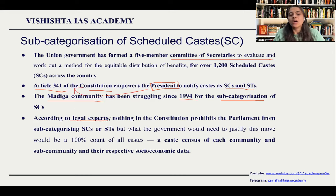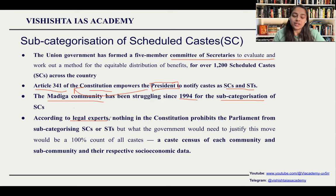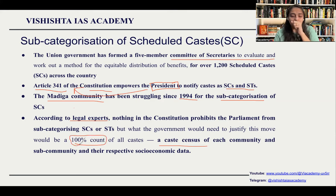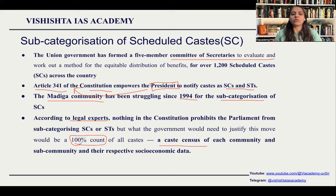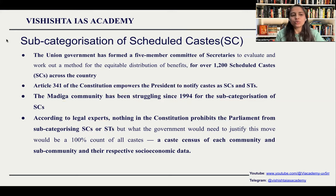According to legal experts, nothing in the Constitution prohibits Parliament from subcategorizing SCs or STs. But as the court also held in the Indra Sawhney case, you have to show backwardness — you have to show accurate data regarding it. In order to justify the subcategorization, there has to be a complete caste census where 100% counting should be done of all the castes. You also need to show why a particular caste is being considered under subcategorization and how they have not been able to benefit from the reservation system.